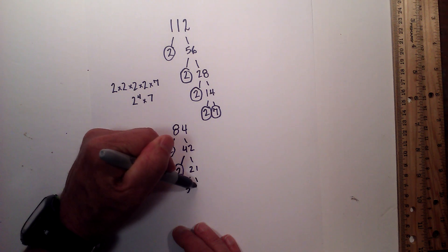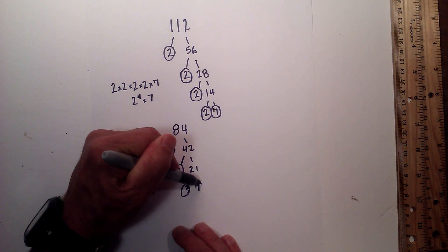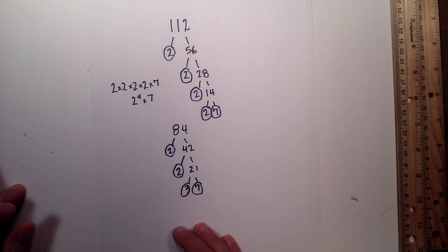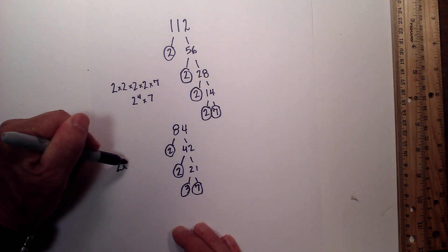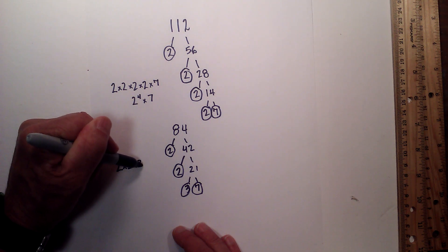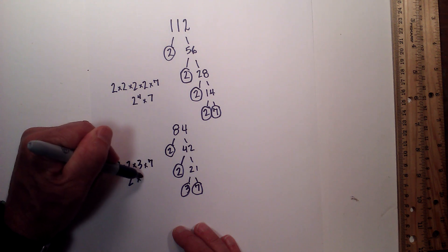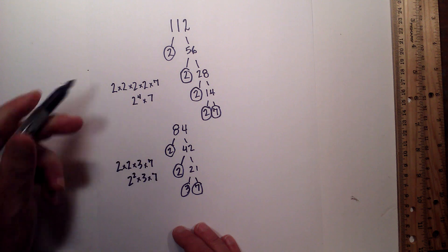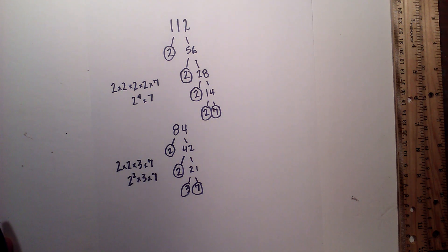And now 3 times 7 — both are prime, so I will circle them. So the prime factorization of 84 is 2 times 2 times 3 times 7, or 2 squared times 3 times 7. So there we go — the prime factorization of 84 and 112.